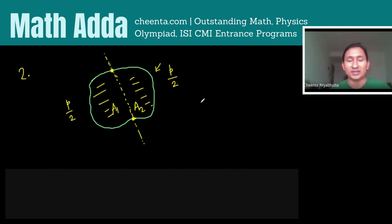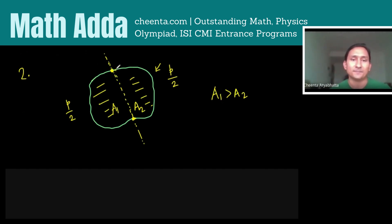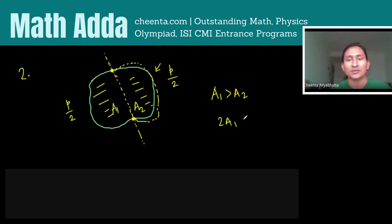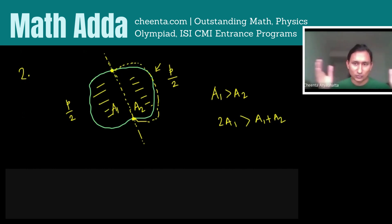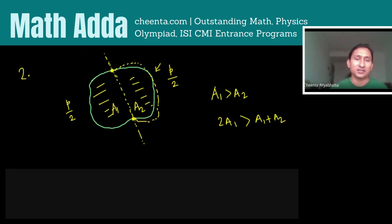Why? Because if A1 is greater than A2, then I can simply reflect this part to the other side to get a curve with area 2A1, which is greater than the previous area A1 + A2, and it has the same perimeter because the two halves have the same perimeter. So that's not possible. For the maximal curve, we have to have two parts of the same area: A1 must equal A2.